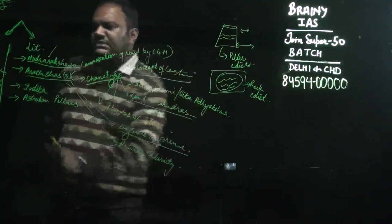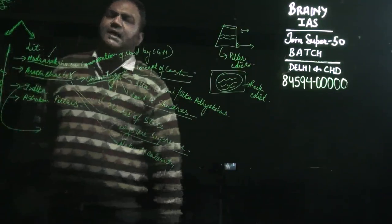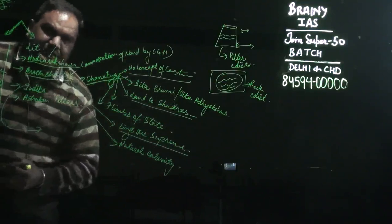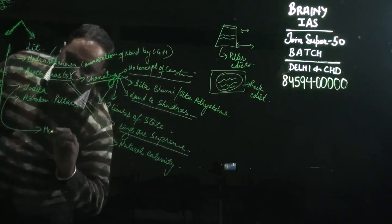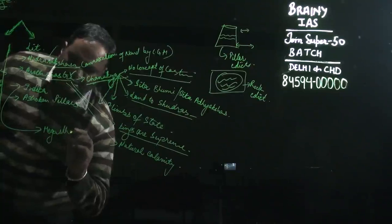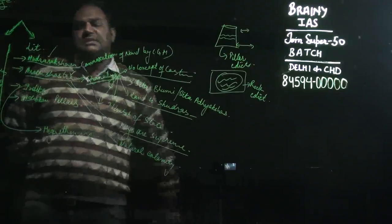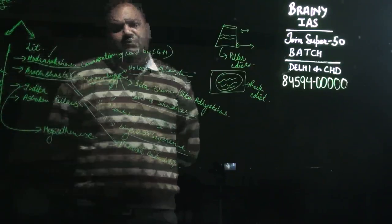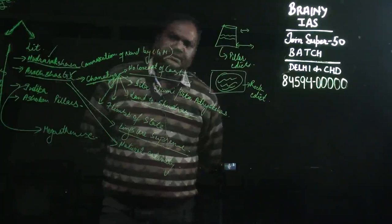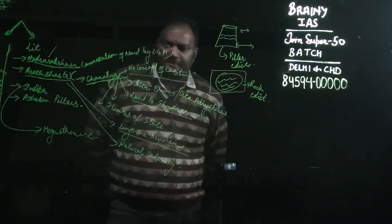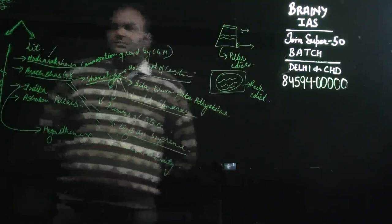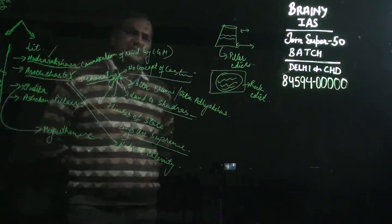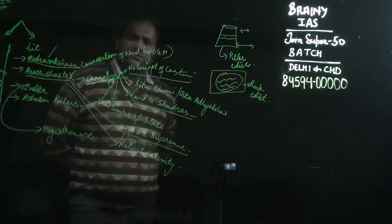Now coming to Indica — Indica was written by the Greek traveler Megasthenes. Megasthenes came to India during the reign of Chandragupta Maurya and stayed in his court. Megasthenes wrote a book and the name of the book was Indica. The original book is not extant today.